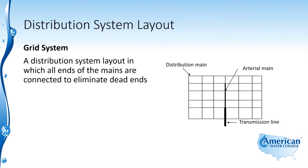The next type of system is the grid system. The grid system is a distribution system layout in which all ends of the mains are connected to eliminate dead ends.